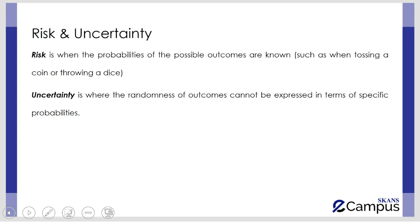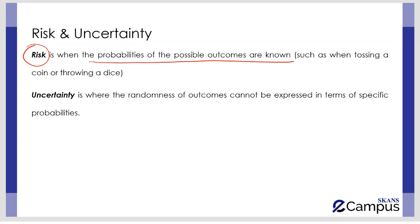Let's have a look at the basic definitions of risk and uncertainty. Risk refers to events in the future which may or may not occur, but whose probability can be mathematically calculated — it is when the probabilities of possible outcomes are known. Uncertainty refers to situations which may or may not occur but whose probability cannot be calculated, where the randomness of outcomes cannot be expressed in terms of specific probabilities.